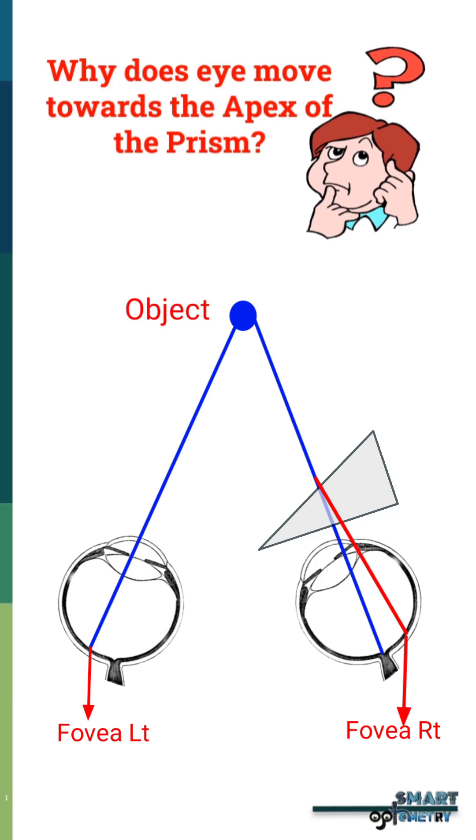If the eye doesn't move, then the ray focusing on an extrafoveal area will create diplopia. That's why eyes move towards the apex of the prism so that rays can be focused in the fovea.